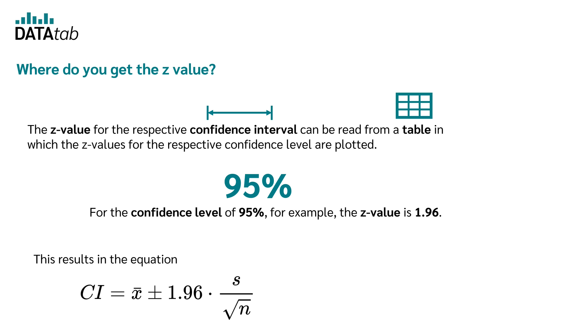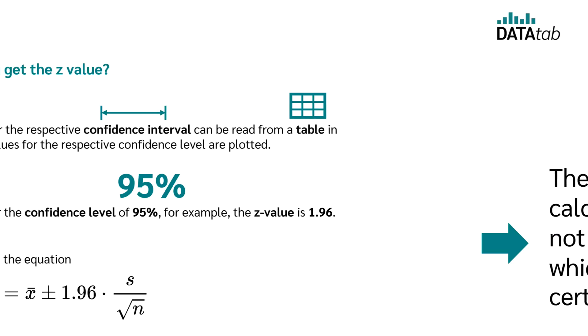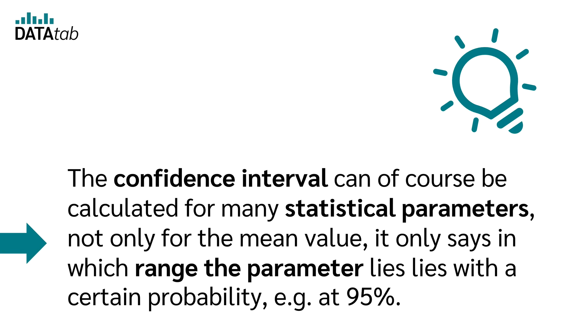This results in the equation x bar plus minus 1.96 times the standard deviation divided by the root of n. The confidence interval can of course be calculated for many statistical parameters, not only for the mean value.